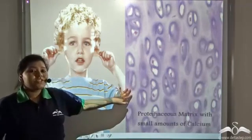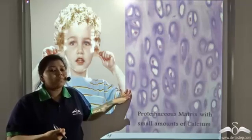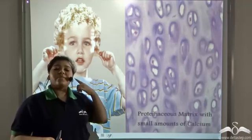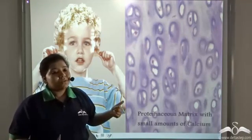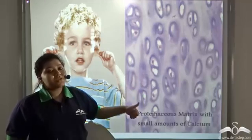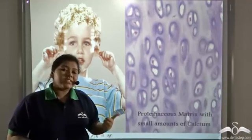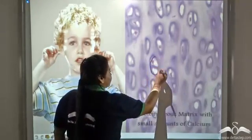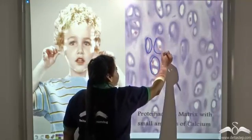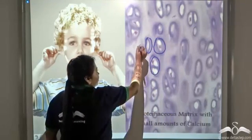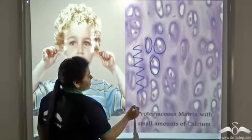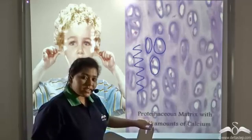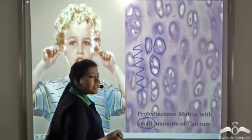Cartilage provides support to the portion of the body where it is situated, like the ear pinna. It is providing support to your ears, and so cartilage is also another supportive connective tissue — connective tissue because it has scattered cells and the space between the cells is filled with a matrix. This matrix is made of proteins and a small amount of calcium.